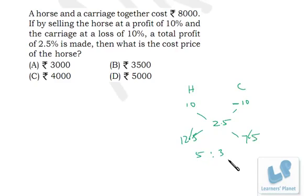So the ratio of their cost is 5 is to 3, that is 5000 and 3000. So cost price of the horse is 5000, cost price of the carriage is 3000. It's very simple.